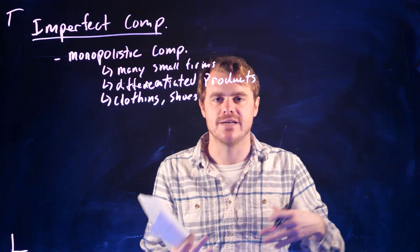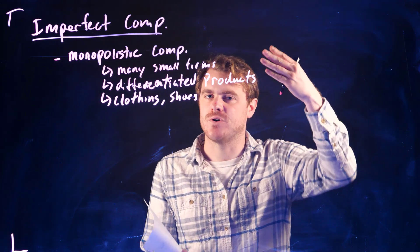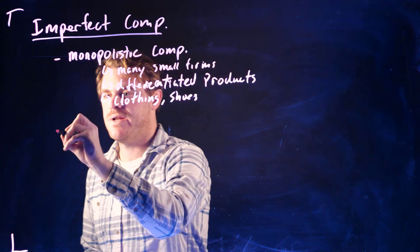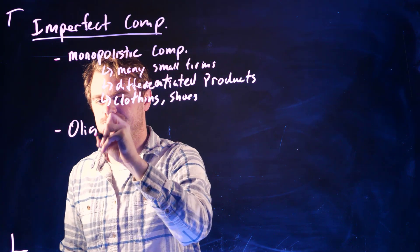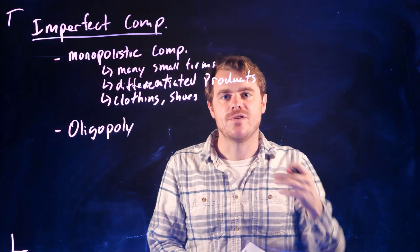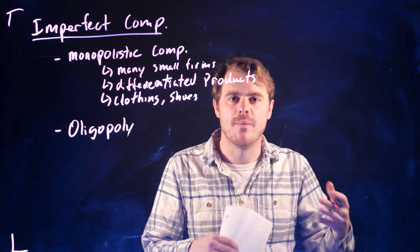Nikes versus Adidas versus whatever else. So that's this first market structure we're going to talk about in this module. And the second one is going to be oligopoly. This is when there's a few large firms that kind of dominate the market.